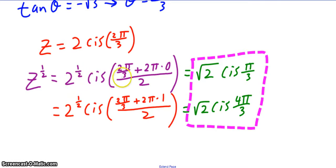So it's going to be 2^(1/2) cis of (2π/3 + 2π·0)/2, and 2^(1/2) cis of (2π/3 + 2π·1)/2. Since I'm using radians, it's 2π; in degrees it was 360 times the index.